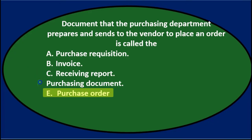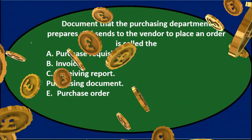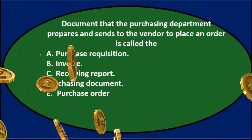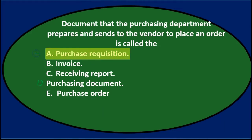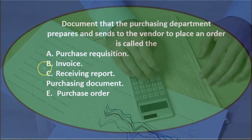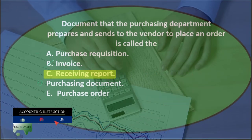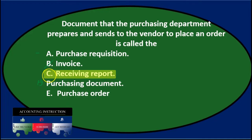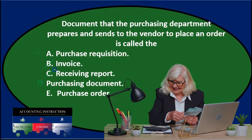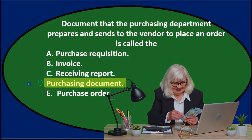Let's go through this one more time. The document that the purchasing department prepares and sends to the vendor to place an order is called the... A. Purchasing request — sounds kind of reasonable, I'll keep it for now. B. Is an invoice — we're not going to send the invoice because that's what we send to our customers, basically a bill for services, not what we're purchasing. So that's not it. C. Is a receiving report — that's going to be the report we get when we receive the goods, so that's actually not it. D. Says purchasing document — sounds kind of reasonable, I'll keep that for now.